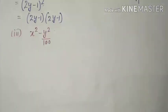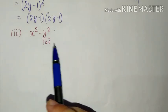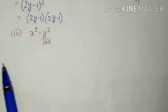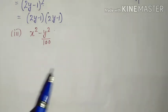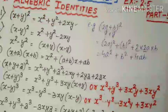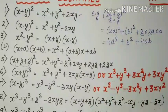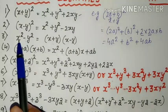Next, third part. Third part mein given hai: x² minus y²/100. Means jo dono terms hain, woh kisi na kisi ka square hain. Isme hamare paas third term nahi given. To means hum first aur second identity use nahi karenge. Agar square ke saath third term bhi given hoti, to ya to first identity use hoti ya second. But isme square nahi given hai — just dono terms ka square given hai. To kaun si identity use hogi? Third identity.